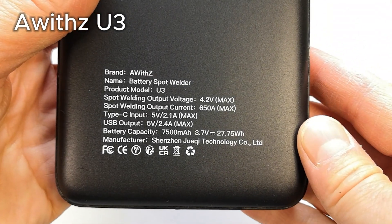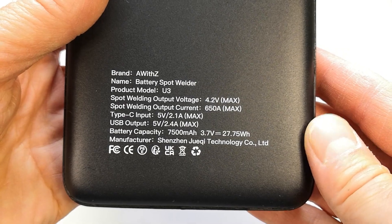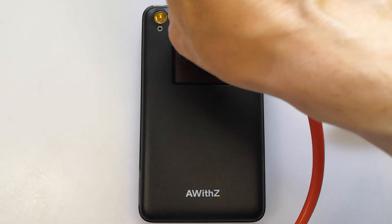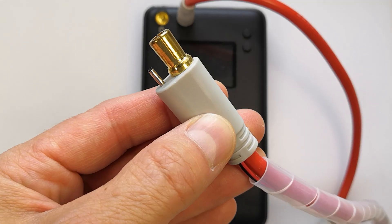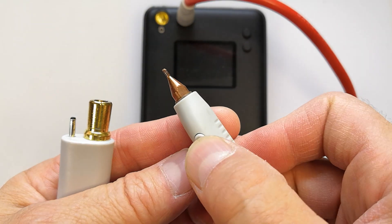It runs on a built-in 7500 mAh battery and can be charged with any USB-C charger. The welding voltage is 4.2 volts. There's a button on the welding cable that you press to start the weld.